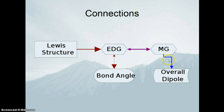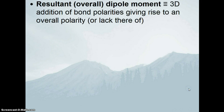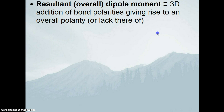Now we're going to talk about how molecular geometry allows us to determine overall dipole moments. A dipole moment is the magnitude of a bond polarity, but we also have an overall dipole moment — sometimes referred to as a resultant dipole moment — which is the three-dimensional addition of bond polarities giving rise to an overall polarity or lack thereof. It is simply the molecular addition of all bond polarities, a longer-distance influence looking at the molecule rather than an individual bond.